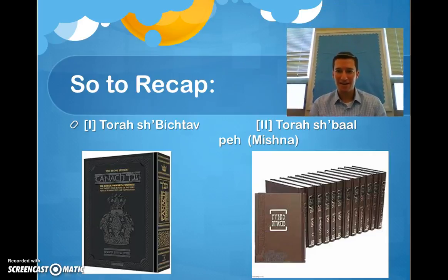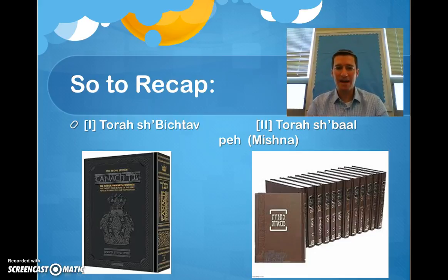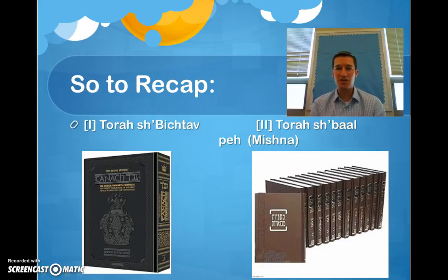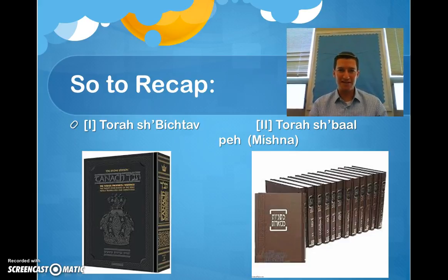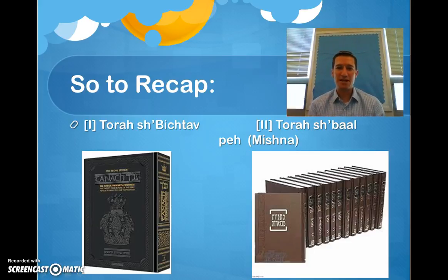We're back for class number two, online using your Chromebooks. We're going to go through the next part of our packet. We've finished the Torah Shebichtav, specifically the Tanakh. We talked about the Mishnah yesterday. Now we're going to move into the Gemara and the Rishonim. This is going to be the last section of our unit before our first test — there will be a test after we finish the Rishonim section.